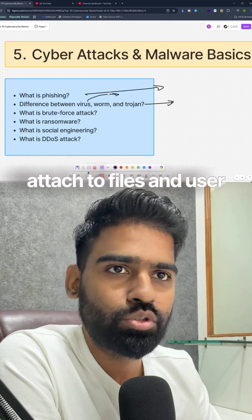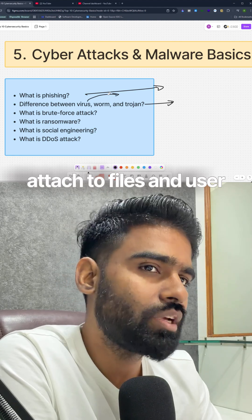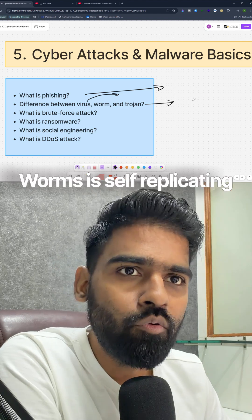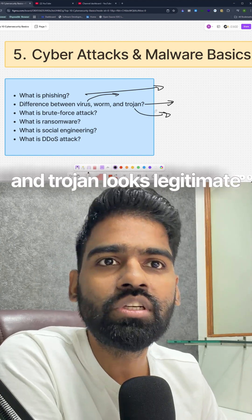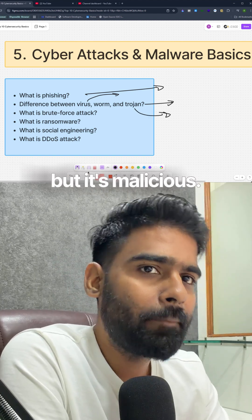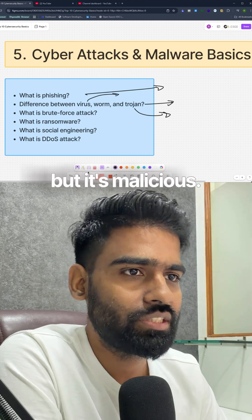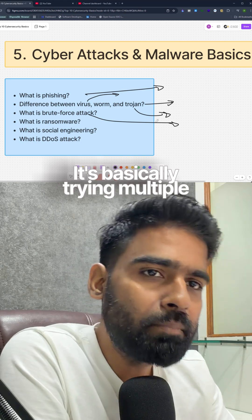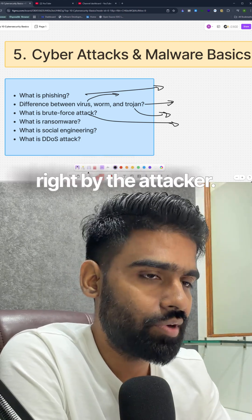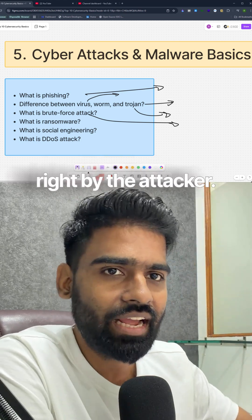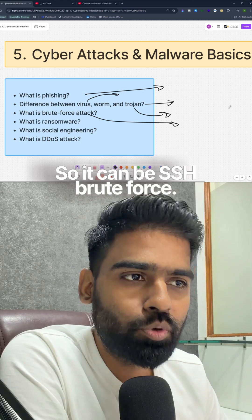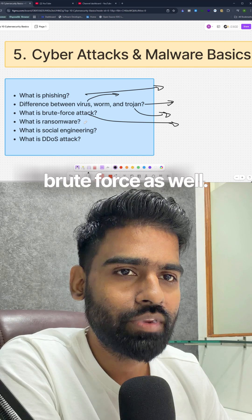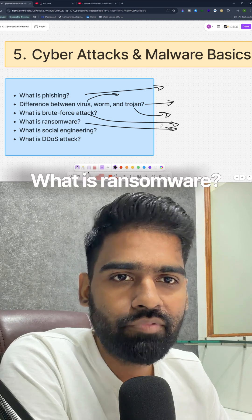A virus attaches to files and requires user action to spread. A worm is self-replicating. A Trojan looks legitimate but is malicious. Then brute force attack — it's basically trying multiple passwords until success. It can be a specific brute force or RDP-based brute force.